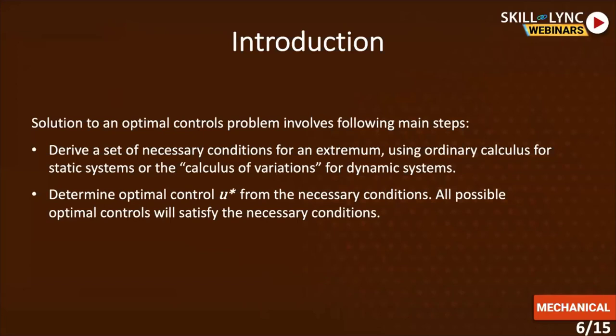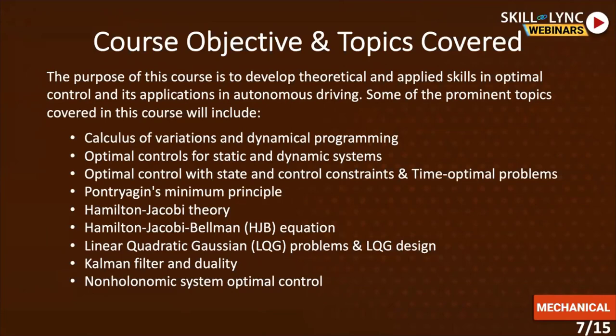Moving forward, I will now define the course objectives and topics covered. The purpose of this course is to develop theoretical and applied skills in optimal control and its application in autonomous driving. Prominent topics covered include calculus of variations and dynamic programming, optimal controls for static and dynamic systems. We will first identify the type of system, then define each element of the problem, and the corresponding solution will come out from the structure. The third topic will be optimal control with state and control constraints and time-optimal problems.